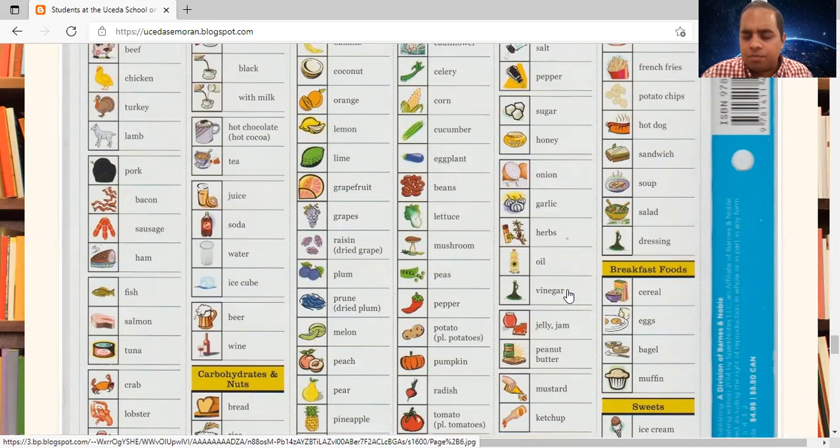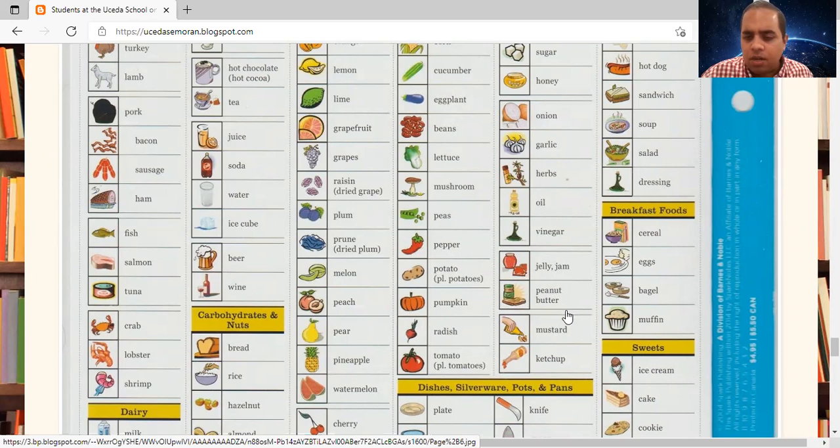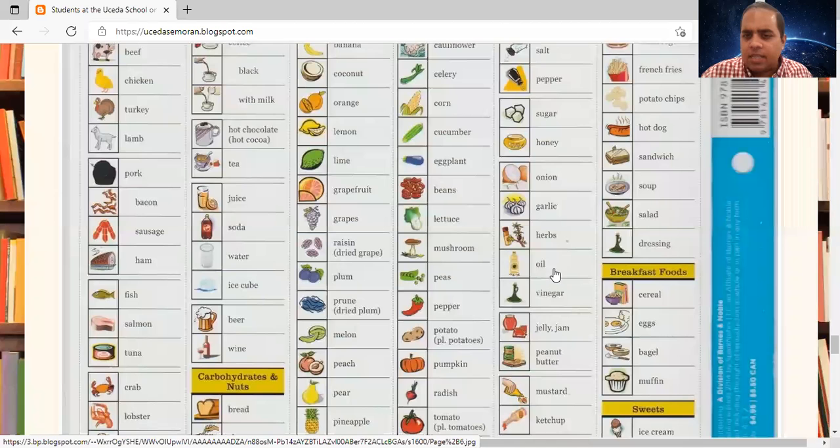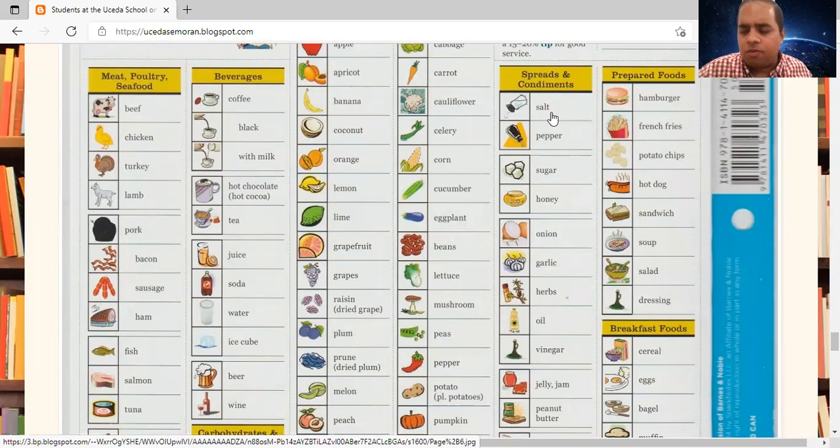Jelly. Jam. Peanut butter. Mustard. Ketchup. Again, spreads and condiments are anything extra you add on the food for flavoring.